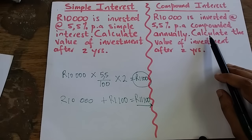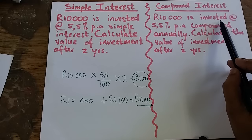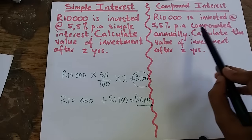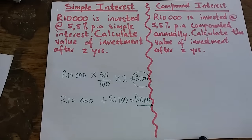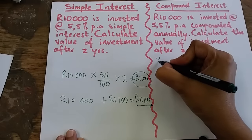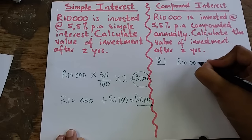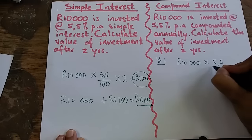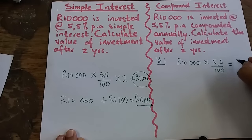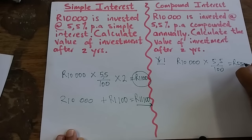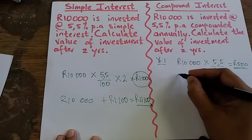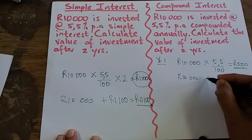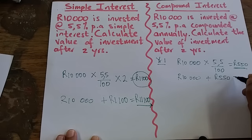For the compound interest question: R10,000 is invested at 5.5% per annum compounded annually. Calculate the value of the investment after two years. For Year 1, we take R10,000 and multiply by 5.5%, giving R550. At the end of Year 1 we add the interest to the principal: R10,000 plus R550 equals R10,550.